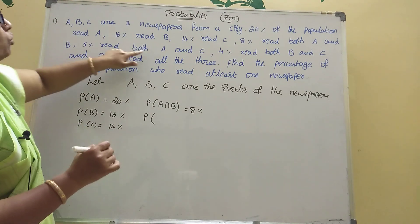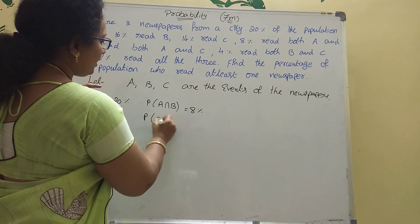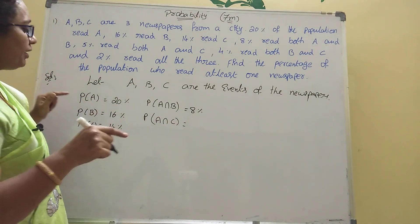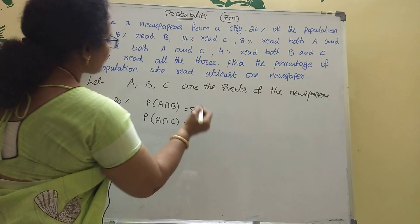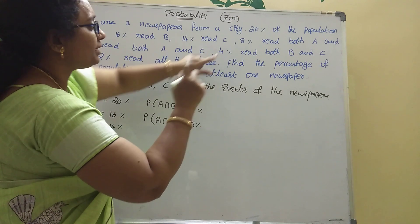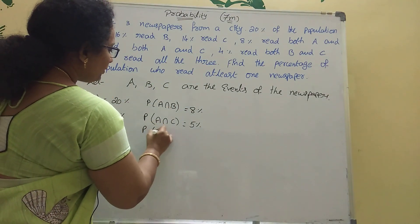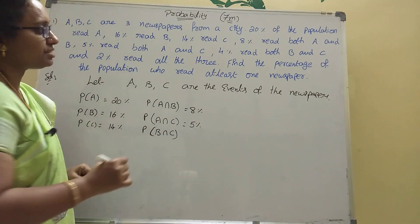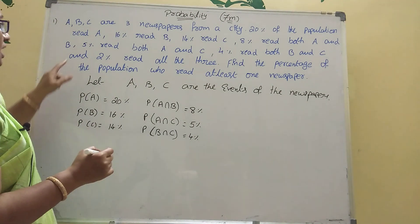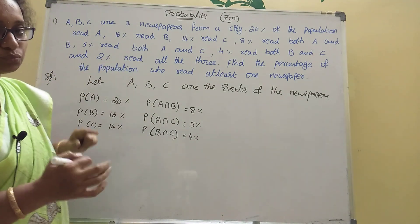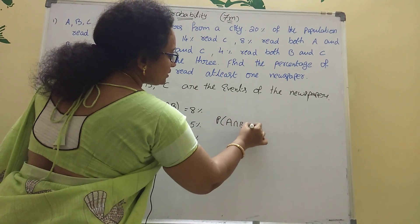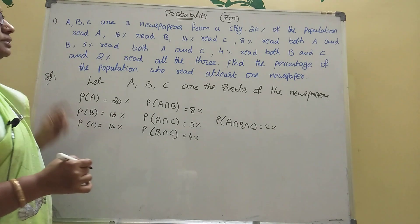5% read both A and C, so P of A intersection C is 5%. 4% read both B and C, so P of B intersection C is 4%. 2% read all three, so P of A intersection B intersection C is 2%.